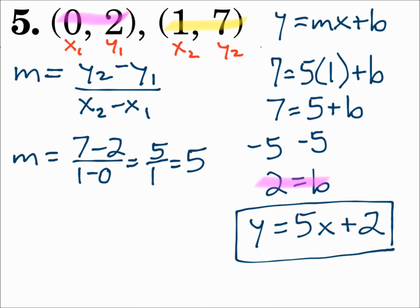So when you write equations in slope-intercept form, find the slope first. If you're given the slope, use that. If you're not given the slope, use the two points and find the slope with the slope formula. Then pick either point and your slope to put into the formula and solve for b. Then use m and b and put it in your final answer. Make sure your answer is simplified. Always finish up with y equals mx plus b.